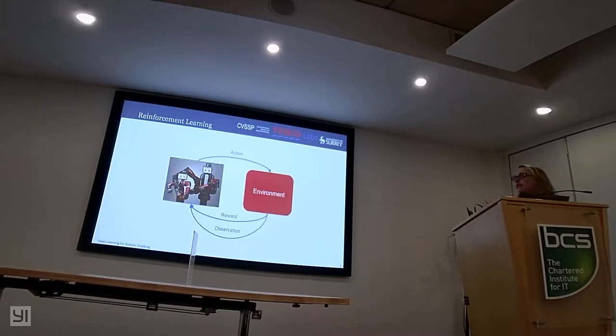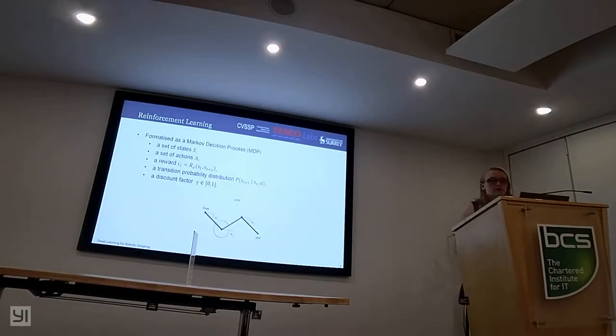In our particular case, we will be using the Baxter robot from Rethink and our environment will be a distribution centre. We form this Markov decision process with states, a set of actions, a reward function telling us how good it was moving from our previous state to our current state, a transition probability distribution telling us the likelihood of any other state from our current state given a particular action, and a discount factor implying how important future rewards are compared to current reward.